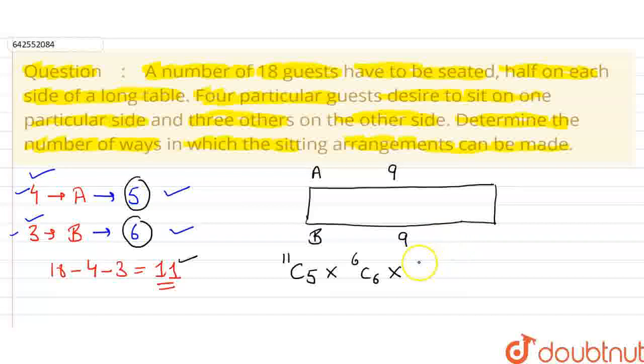So, the guests of side A can be arranged by 9 factorial because they are 9 guests and also the guests of side B can be arranged by 9 factorial ways because they are 9 guests.